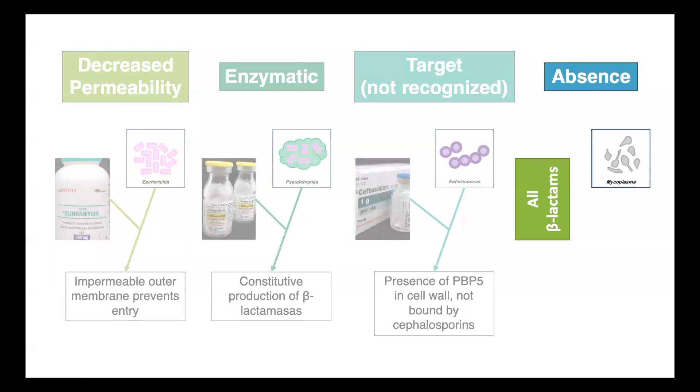And finally, my favorite example of intrinsic resistance are the mycoplasma. This genus of bacteria does not have a peptidoglycan-based cell wall, and as the beta-lactam type antibiotics act by interfering with peptidoglycan synthesis, they are intrinsically resistant. They simply lack the target.